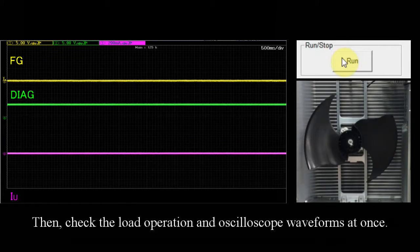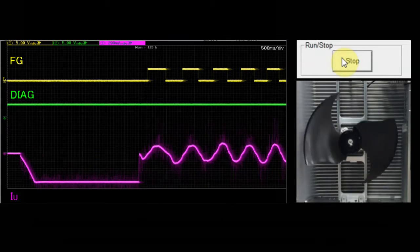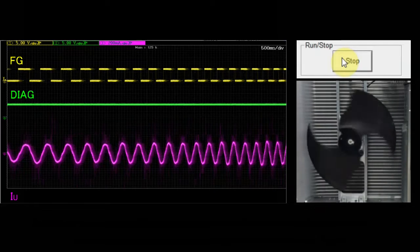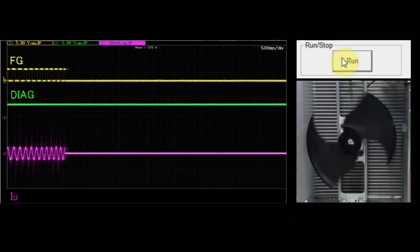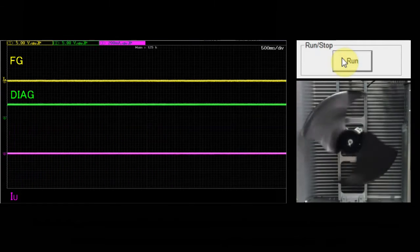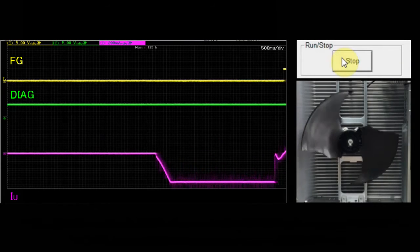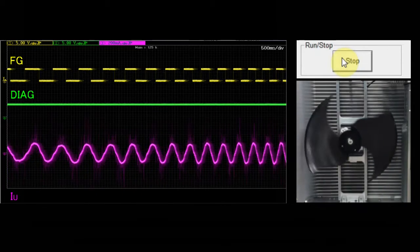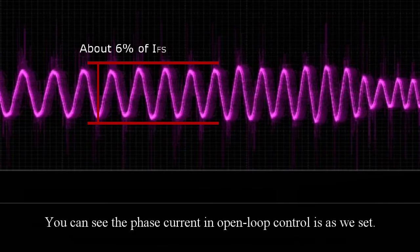Then, check the load operation and oscilloscope waveforms at once. Again, take a look at the phase current of the operation you just saw. You can see the phase current in open loop control is as we set.